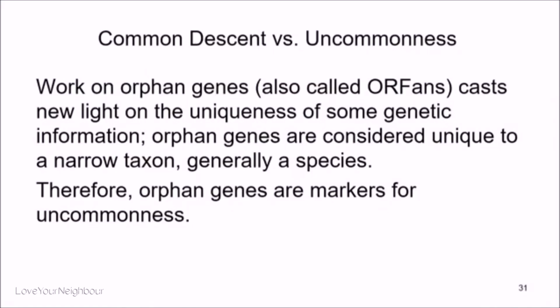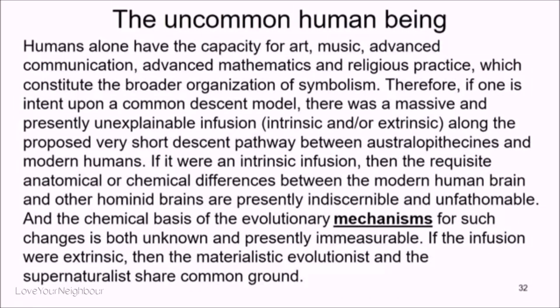If you look at just that 1.5%, we're 70% the same as a dandelion — that's true. There's also work on orphan genes, which are unique to a narrow taxon — generally a species — and are therefore markers for uncommonness. Humans alone have the capacity for art, music, advanced communication, advanced mathematics, and religious practice, constituting the broader organization of symbolism. Therefore, if one accepts a common descent model, there was a massive and presently unexplainable infusion — intrinsic or extrinsic — along the proposed very short descent pathway between australopithecines and modern humans.